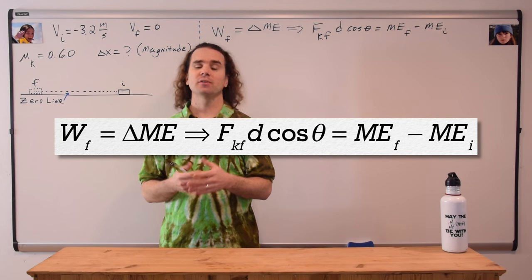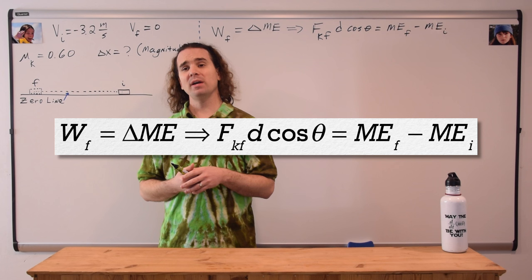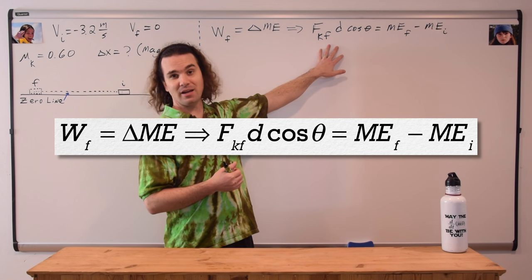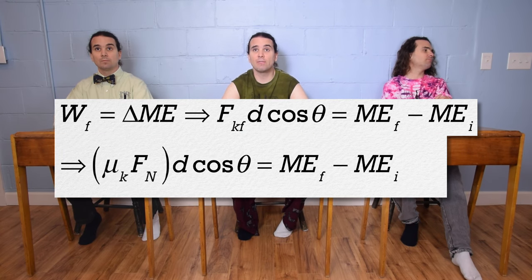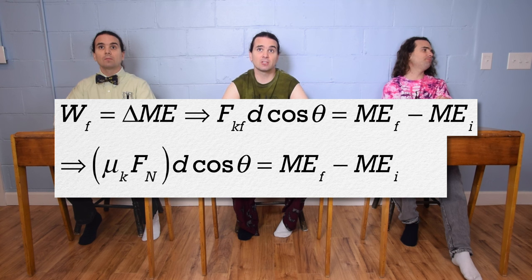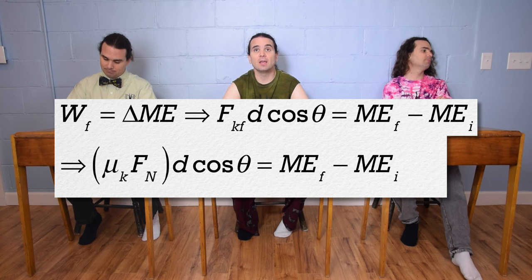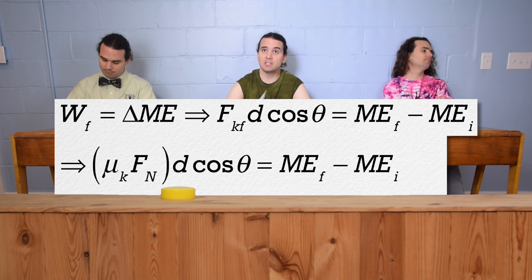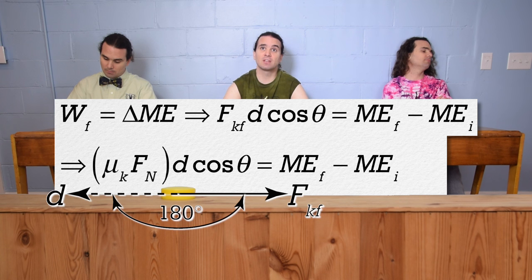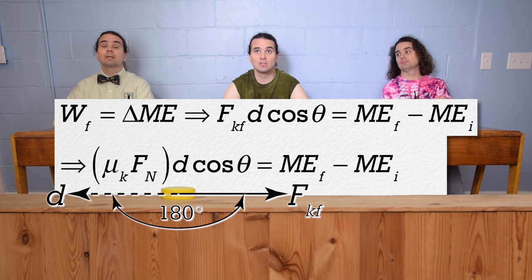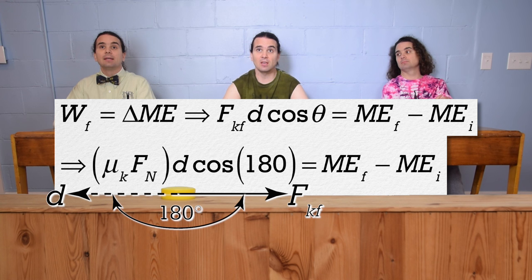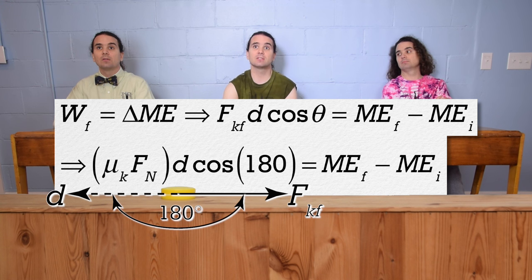Now we can work with the equation. Bobby, what can we do with the left-hand side? We can substitute the coefficient of kinetic friction times force normal for the force of kinetic friction. The displacement of the puck is to the left and the force of kinetic friction is to the right, and the angle between those two directions is 180 degrees, so theta equals 180 degrees.